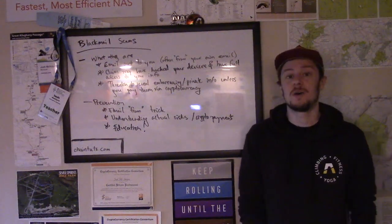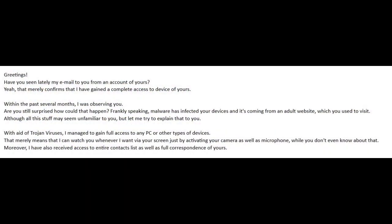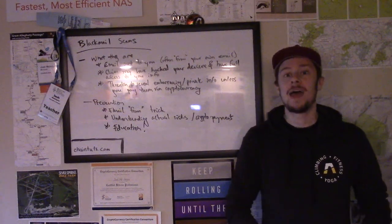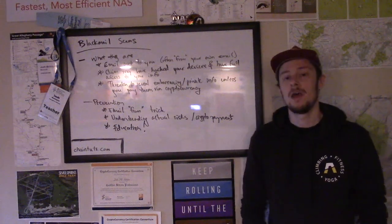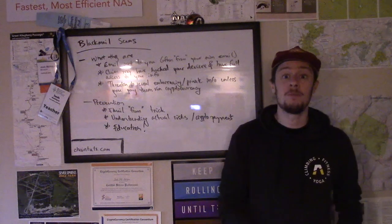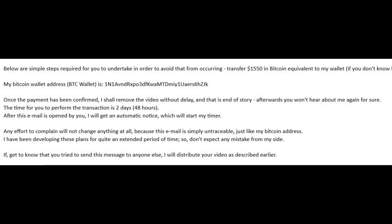An email blackmail scam often starts by you receiving an email that looks like it actually came from your own email address. In this email, someone claims that they have gained full access to your devices — your phone or your laptop — using some type of malware. The attacker claims they have access to all of your private information: your documents, your photos, your videos, your camera, your microphone, and that they have gathered some private dirt on you. The scammer then says they will reveal this embarrassing information to your family, friends, co-workers, or anyone in your contacts list — unless you pay them in cryptocurrency, in which case they will simply delete the information and move on.